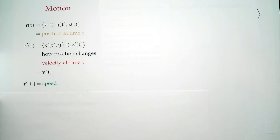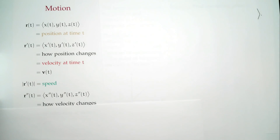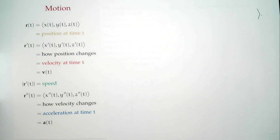What about the second derivative? Take the derivative of the first derivative, entry by entry. If the first derivative tells me how position changes, the second derivative tells me how velocity changes — that's acceleration.